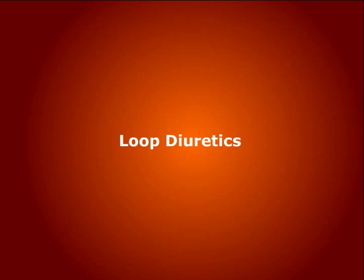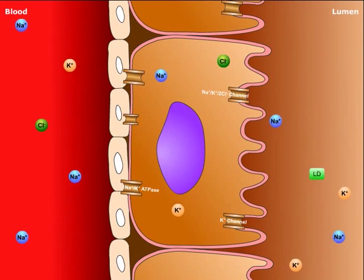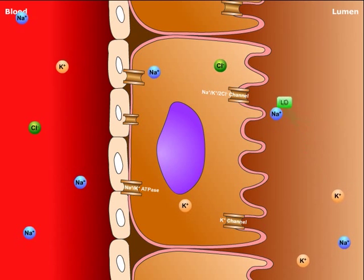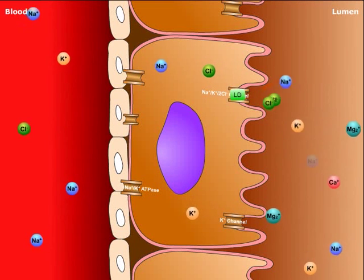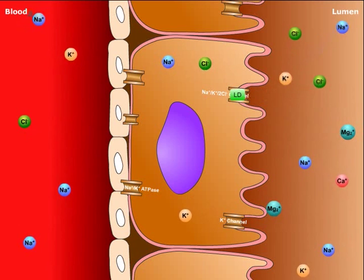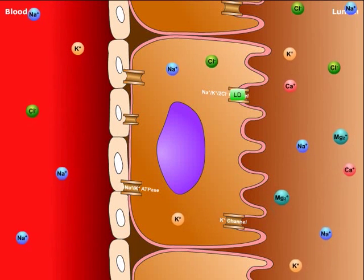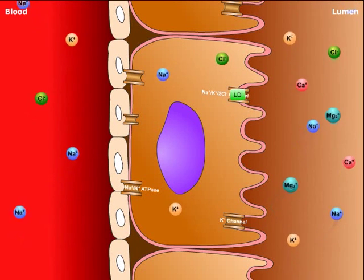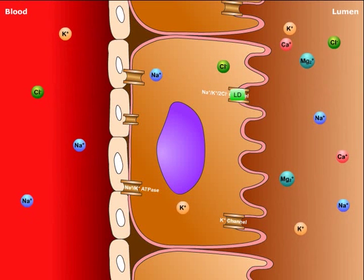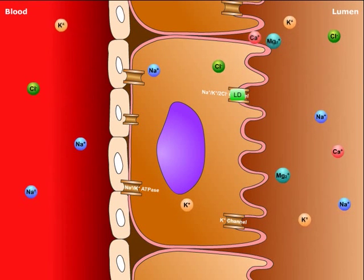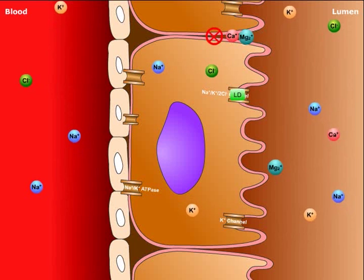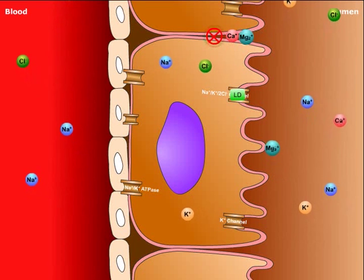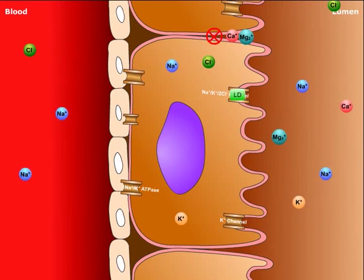Let's now review the action of loop diuretics. Loop diuretics, labeled here as LD, work in the thick ascending loop of Henle by blocking the sodium-potassium dichloride symport. Thus, loop diuretics inhibit the reabsorption of sodium, potassium, and chloride, which will be lost in the urine. Furthermore, due to the loss of these ions, the lack of a positive electrical potential within the lumen will prevent the reabsorption of magnesium and calcium. Thus, they too will be lost in the urine.